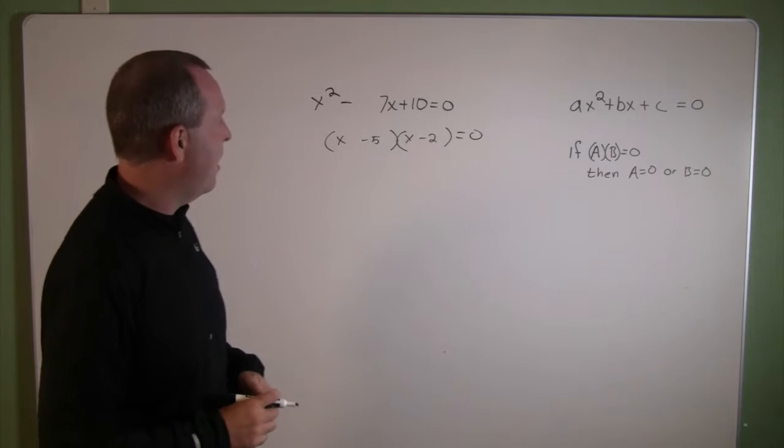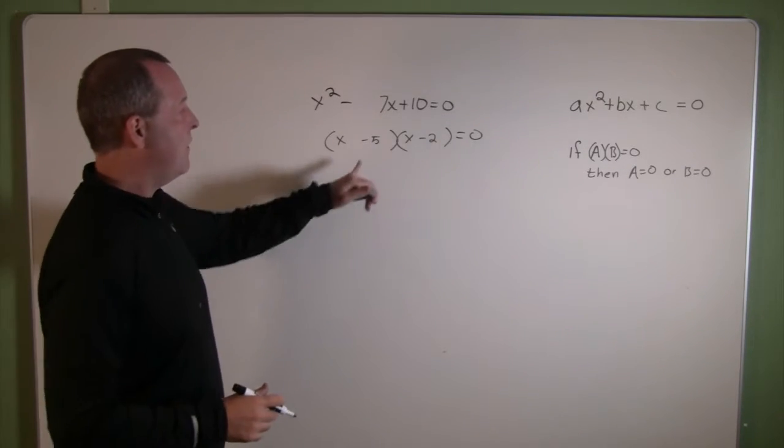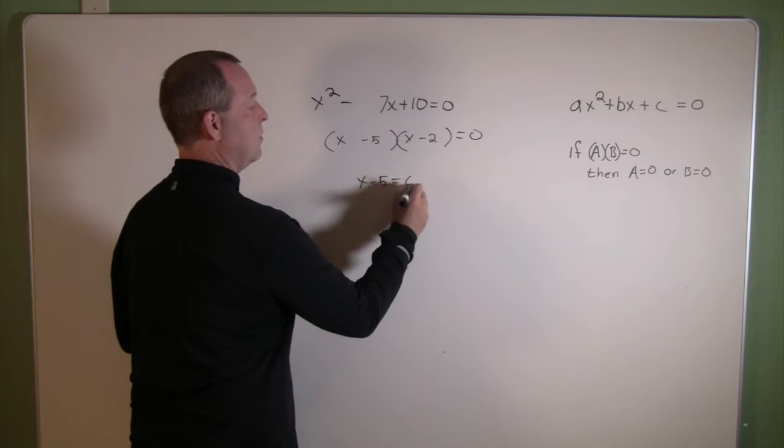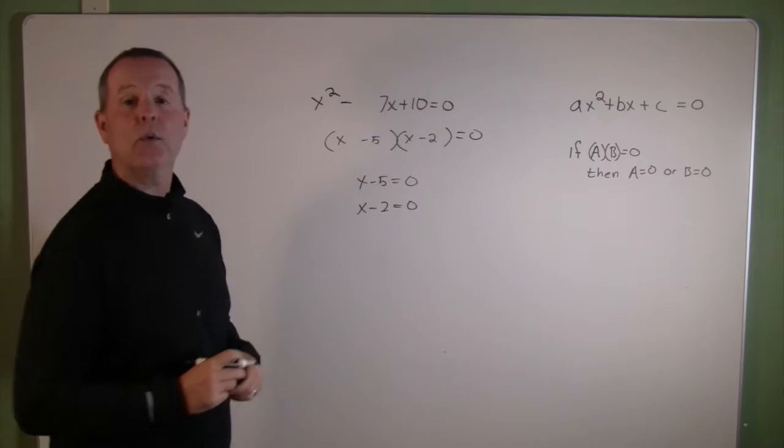Applying that property, applying that idea to this problem where we're at now, then we know that in order for this to be true, either x minus 5 has to equal zero or x minus 2 has to equal zero.